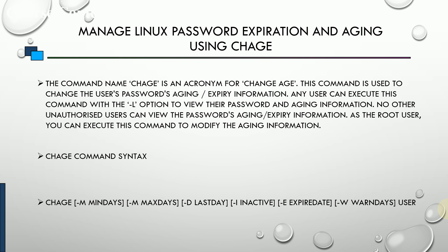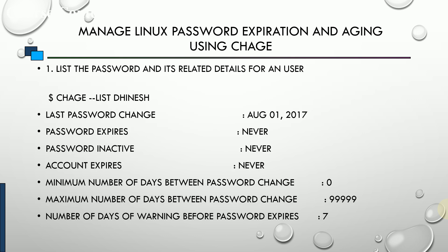We'll understand the syntax during the lab session. The command is simply 'chage --list' followed by the username. It gives you details about the user — for example, user Dinesh last changed his password on August 1st, 2017. It shows when the password is going to expire, when it becomes inactive, account expiration, the minimum number of days between password changes, the maximum number of days, and the number of warning days before the password expires.